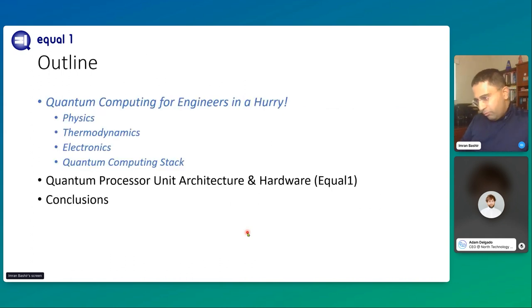With that, let me give you a brief outline. Majority of the presentation is going to be my favorite section called Quantum Computing for Engineers in a Hurry, where we kind of go through a potpourri of subjects in physics, thermodynamics, electronics, and a little bit of software. And then the latter part of the presentation is going to be the Equal1 silicon qubit technology and the hardware cryogenic electronics solution.